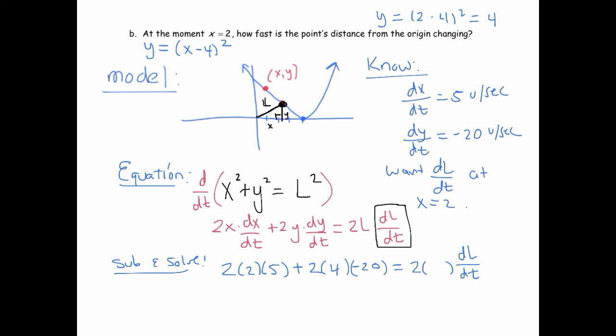And then once we know that, we can find L, because by the Pythagorean theorem, at that instant, we've got x being 2, y being 4. So L would be the square root. That implies that L is the square root of 4 plus 16, square root of 20.